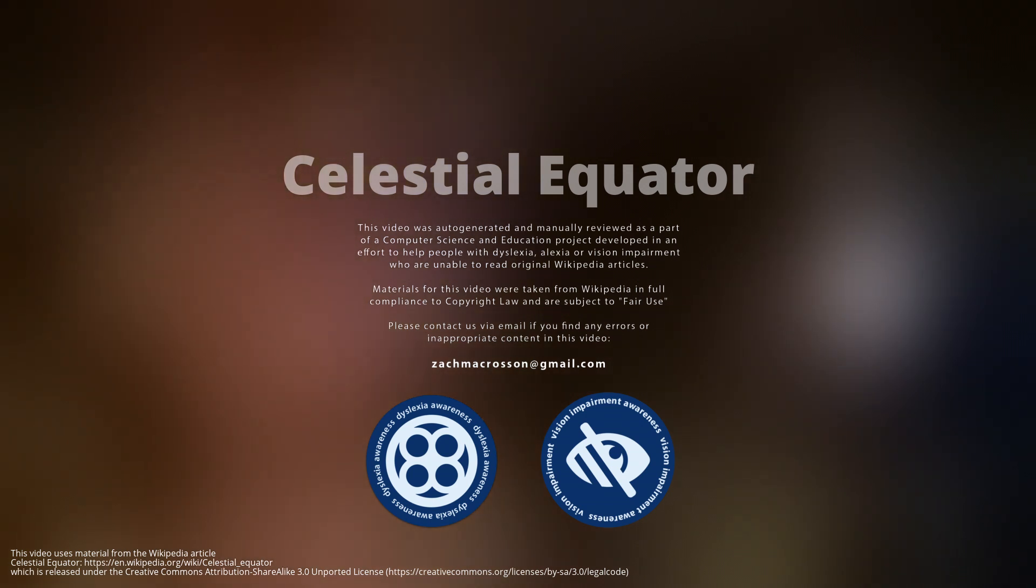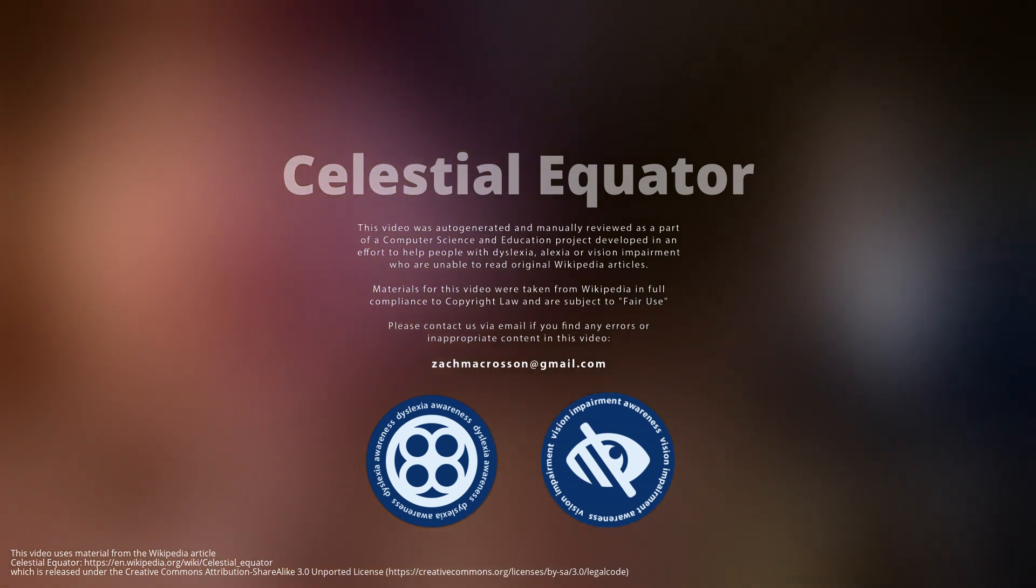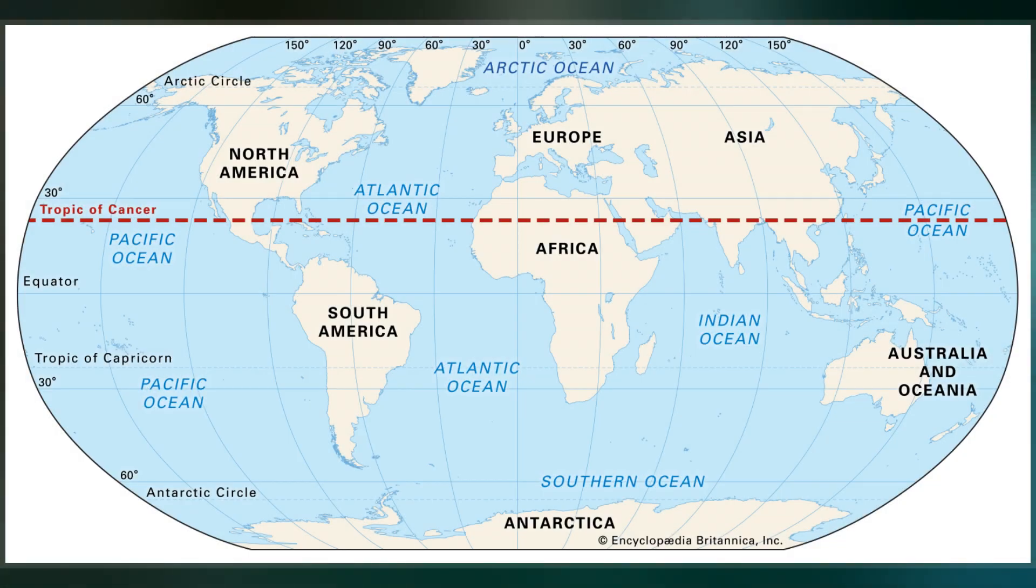The celestial equator is the great circle of the imaginary celestial sphere on the same plane as the equator of Earth. This plane of reference bases the equatorial coordinate system.